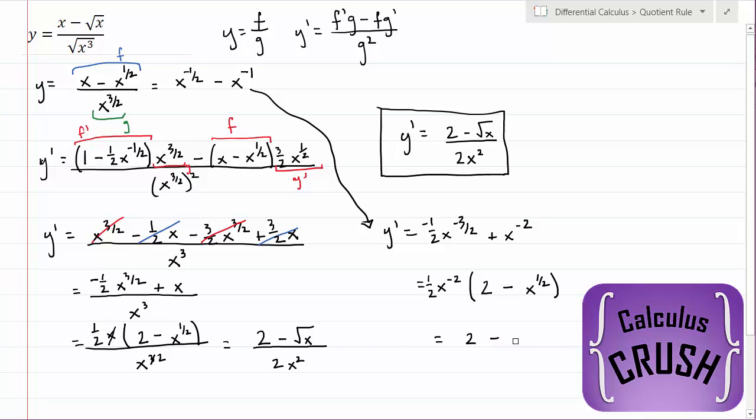So if we write that, 2 minus the square root of x over 2x squared. It's the same expression we got here. But of course, that way was much easier. And that is the way you should do this question. It's not necessary to use a quotient rule.